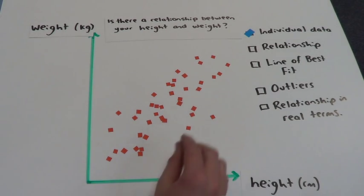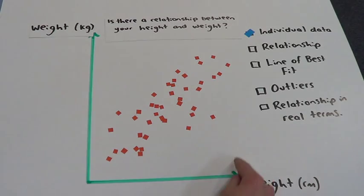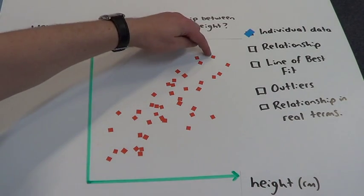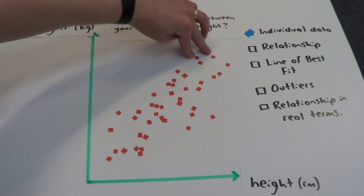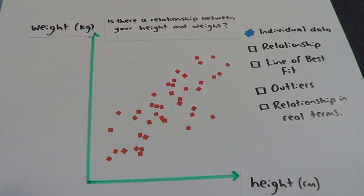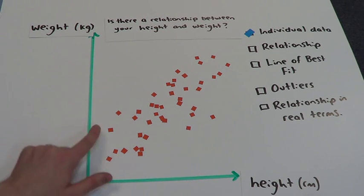So this one here would say who is the tallest person? This is the tallest person. They are that many centimeters high. Who is the heaviest person? This person, maybe those two, because they're the highest weight. Who is the lightest person? This one here, who also happens to be the shortest person.